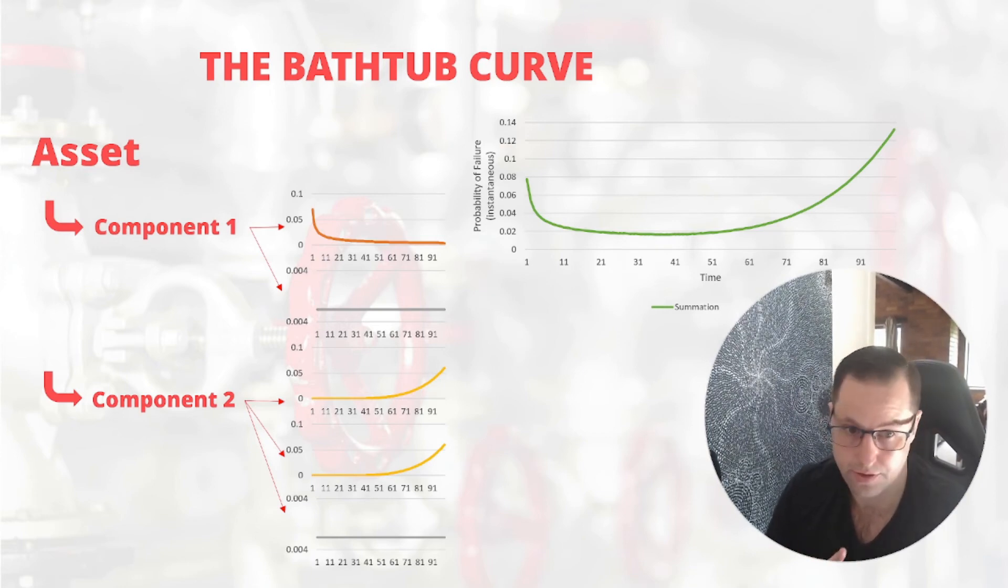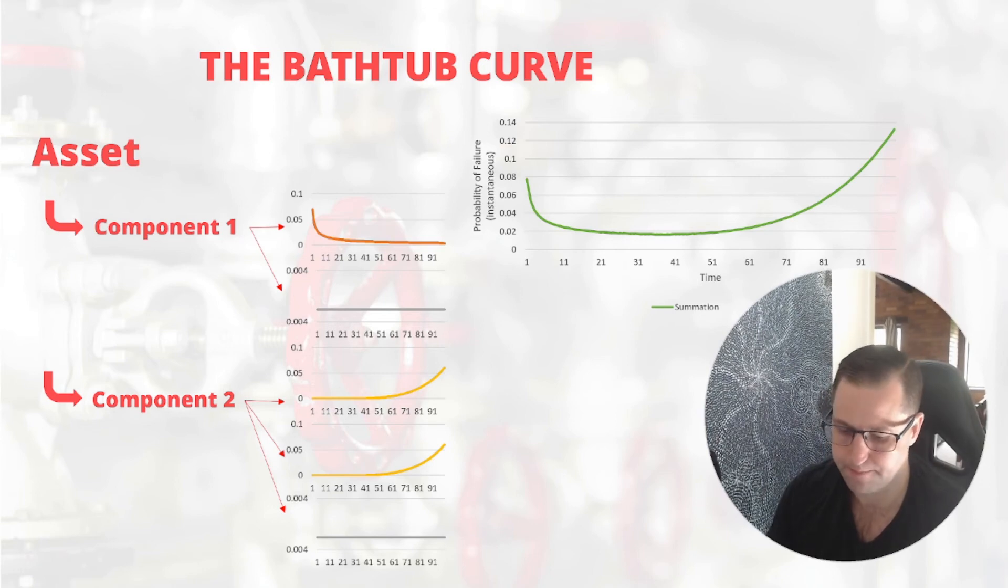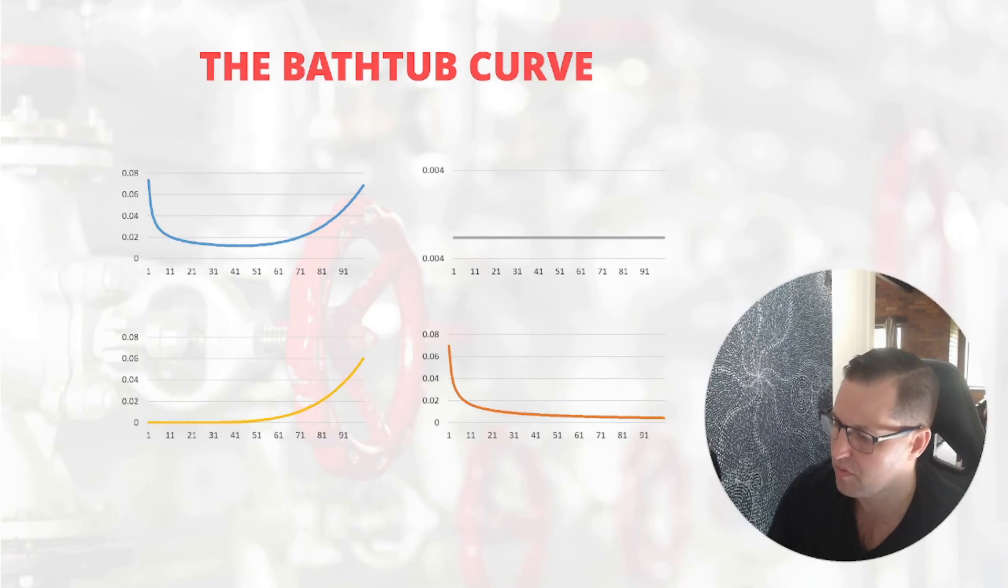Now armed with this knowledge, we can understand why not all assets follow the bathtub distribution. Some can be like the yellow curve, the gray curve or the orange curve shown on your screen or any combination of.